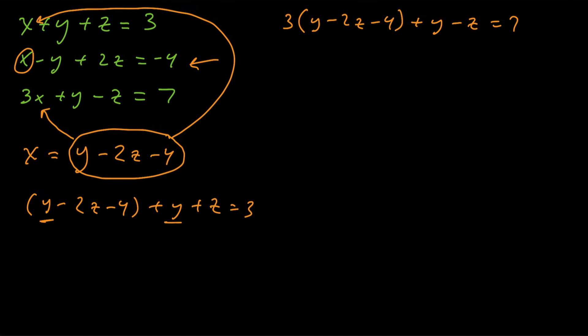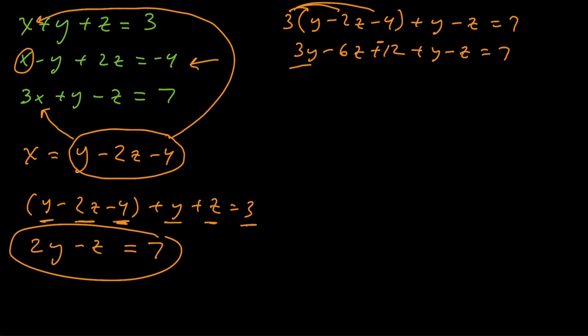So I've got y and y, that's 2y. I've got negative 2z and 1z, that's negative 1z. This negative 4, I'm going to add 4 to the other side of the equation to get this equal to 7. So I just kind of cleaned it up a little bit. So that's one of our equations. And then the other one, I'm going to distribute that 3 into the parentheses. That's going to be a negative 12. And then now let's clean it up a little bit further. We've got 3y and 1y, which is 4y. We've got negative 6z and negative 1z, which is negative 7z. And this negative 12, I'm going to add to the other side, which is going to give us equal to 19.